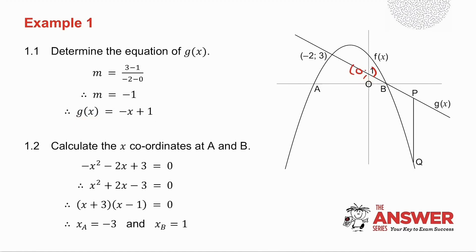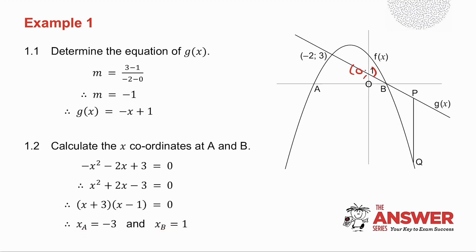Question 1.2 asks you to calculate the x-coordinates at a and b. a and b are the two x-intercepts. How do I find the x-intercepts of a graph? I make y equal to 0 and I get my two values of x.